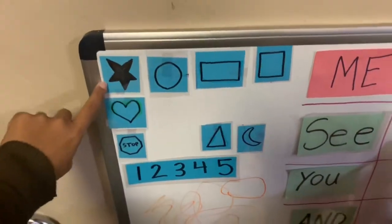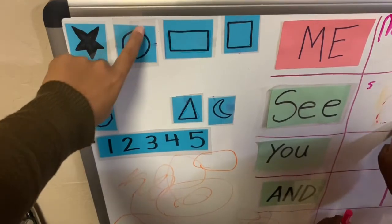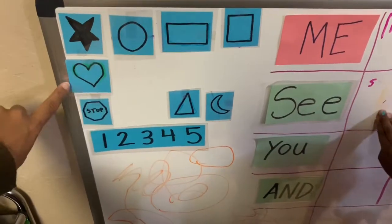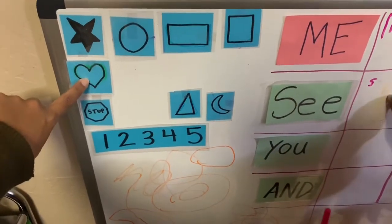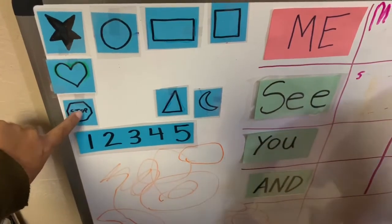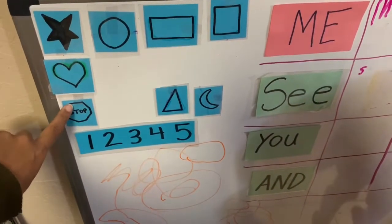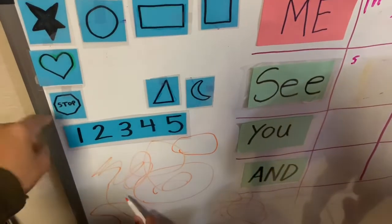Can you tell me what shape this is? Great. What about this? Great. What about this? Wonderful. What about this one? Oh, that's right. It's like a stop sign, but it's an octagon. Can you say octagon?